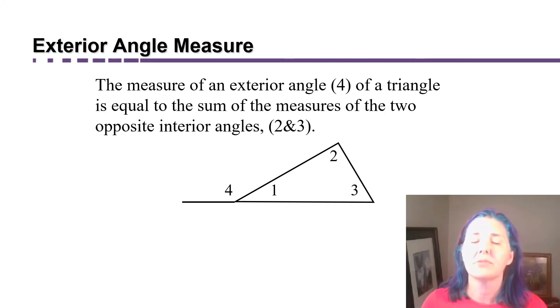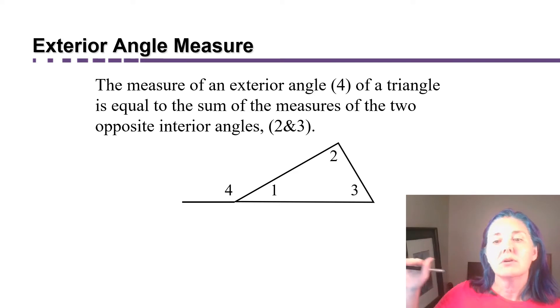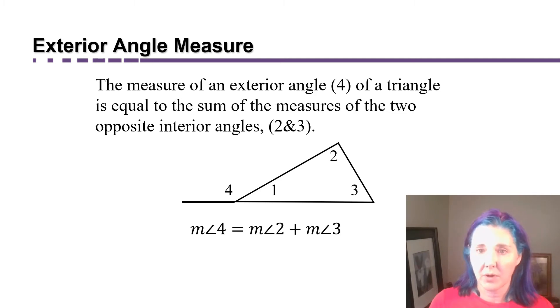There's another relationship that has to do with the angles inside of a triangle, but it's how they relate to the angles outside of a triangle. If you extend any one side of the triangle, we get what's called an exterior angle, like angle 4. And it turns out that the two angles not adjacent to angle 4, the two opposite interior angles, number 2 and 3, have to add up to the same measure as angle 4.